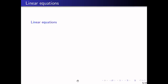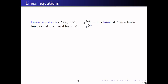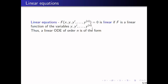The next classification is linear versus non-linear equations. For an ODE written as F(x, y, y', ..., y^(n)) = 0, we say it is a linear ODE if F is a linear function of the variables y, y', and so on up to the nth derivative. Note that we are not asking F to be linear with respect to x — only with respect to y and its derivatives. This is a linear equation in the sense you have already seen in the course on linear algebra, MA106.